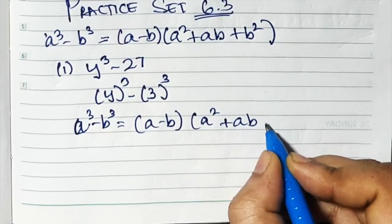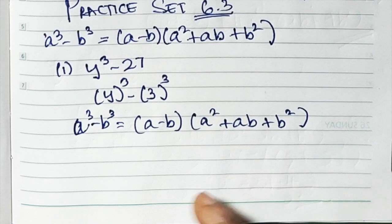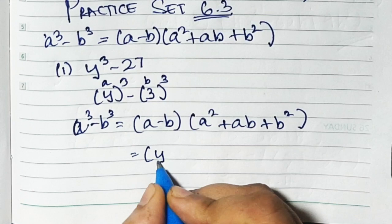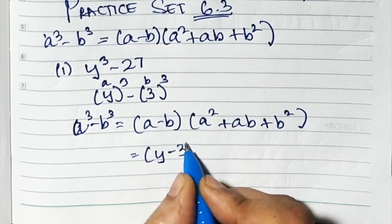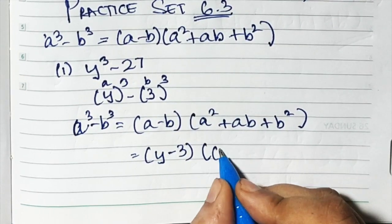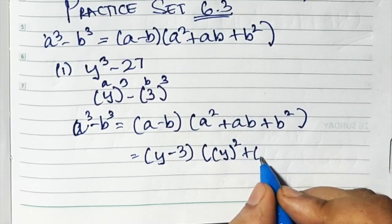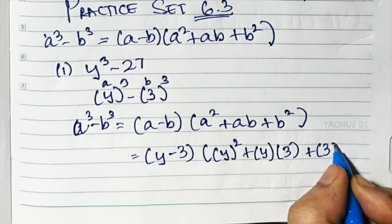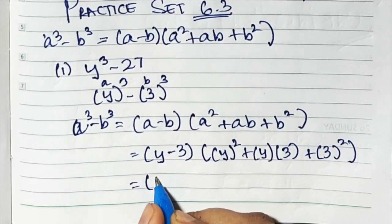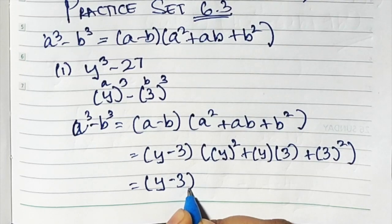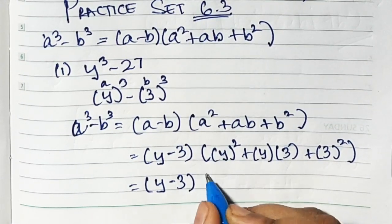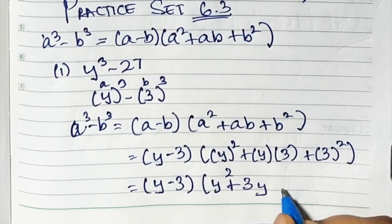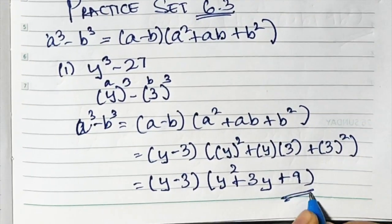Our a is y and our b is 3. Substituting: for a put y, for b put 3. So we get y minus 3, times y square plus 3y plus 9. The square of 3 is 9. So this is your answer: (y - 3)(y² + 3y + 9).